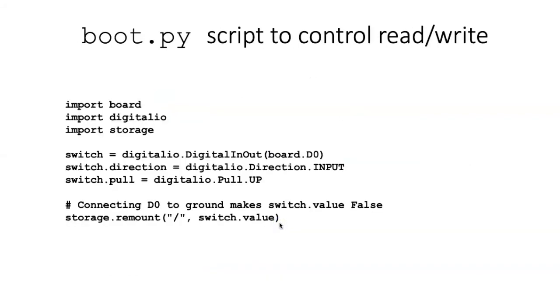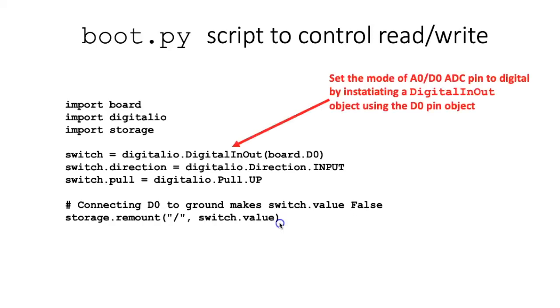Here is how I can write a boot.py script that will determine the read or write state. I have to set the mode of that A0D0 pin, the one that I soldered the wire onto, by creating a digital IO object, which I'm going to call switch. And here I've designated that that should be the connection D0. Once I've done that, then I set the direction of input and output to input.